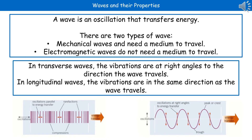Today's physics prep is looking at waves. A wave is an oscillation that transfers energy. We have two types: mechanical waves that need a medium to travel, and electromagnetic waves which do not need a medium. Waves can take two forms: transverse waves, where the vibrations are at right angles to the direction the wave travels, or longitudinal waves, where the vibrations are in the same direction as the wave travels.